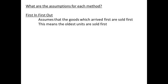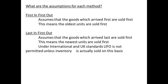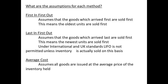A number of assumptions are made for each method. For FIFO — first in first out — we assume goods that arrive first are the first sold. For LIFO — last in first out — we assume that the goods which arrived last are the first sold; the newest units are the ones being sold. Under international standards this method is not permitted unless inventory were actually sold this way. Under AVCO, the assumption is that all goods are issued at an average price of the inventory that is held.